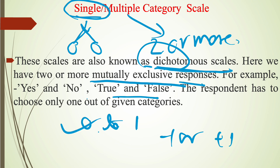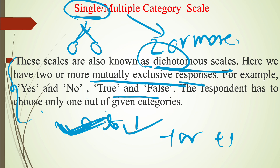The respondent has to choose only one out of the given categories. He or she has to select only one choice in the case of a single category scale. The respondent has to select only one option from the question given in the response sheet.